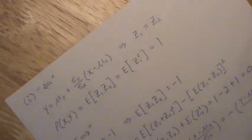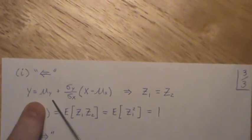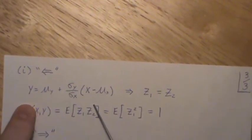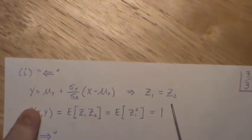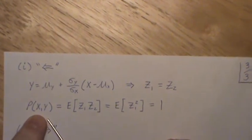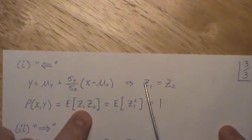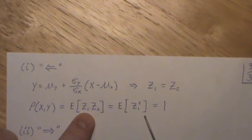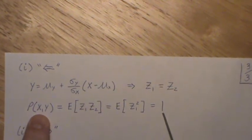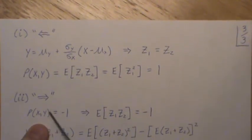Now to prove it the other way — we're still on part 1 and it was an if-and-only-if — we now assume the linear relationship is true. If you subtract the mean of y and divide by the standard deviation, that implies z1 is equal to z2. So the correlation — which we showed is equivalent to E[z1·z2] — with z1 equal to z2 we substitute and get E[z1²]. The expected value of z1 squared is 1, so the correlation has to be 1 if we assume the linear relationship is true. Part 1 is proved.